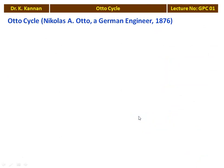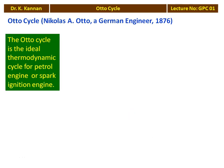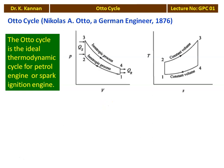The Otto cycle was invented by Nicholas A. Otto, a German mechanical engineer, in the year 1876. The Otto cycle is the ideal thermodynamic cycle for the petrol engine. The Otto cycle consists of four processes: 1 to 2, 2 to 3, 3 to 4, and 4 to 1.